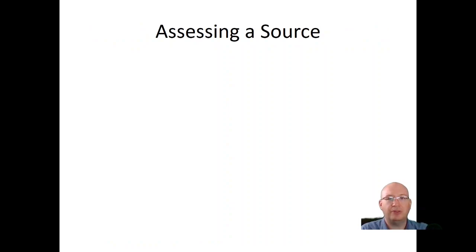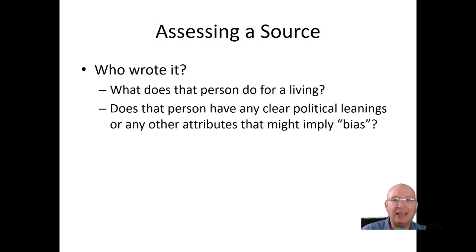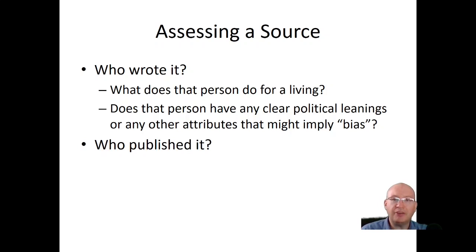So how do you assess a source? First, you want to know who wrote it. Who's the author, and what does this person do for a living? Is this an amateur historian, a novelist, or a university professor? By what authority can they write about history? Does this person have any clear political leanings or other attributes that might imply bias we should be on the lookout for? It's very important in historical writing that we consider the person writing it. It doesn't mean we can dismiss them because they have different politics, but we do have to pay attention to that.